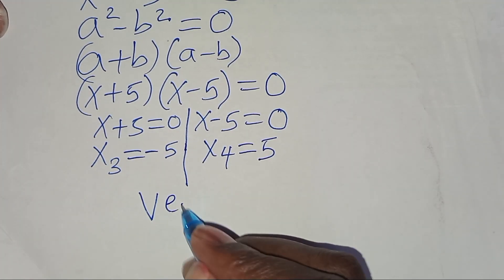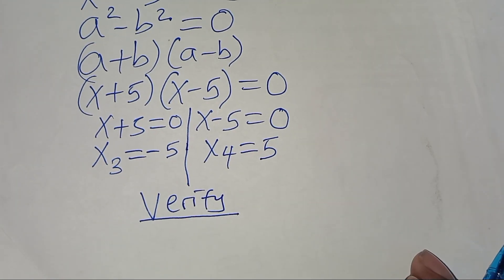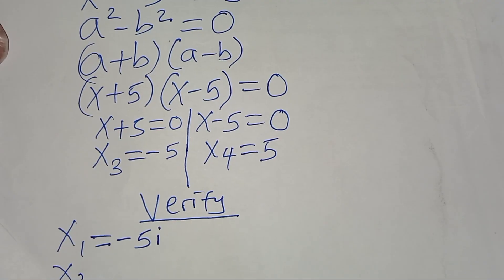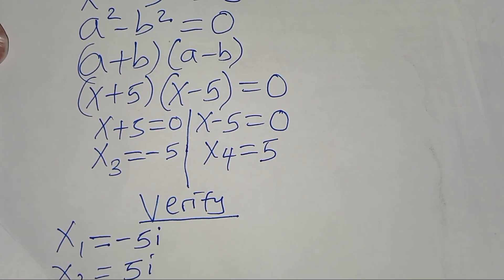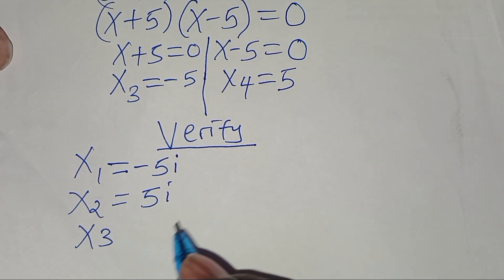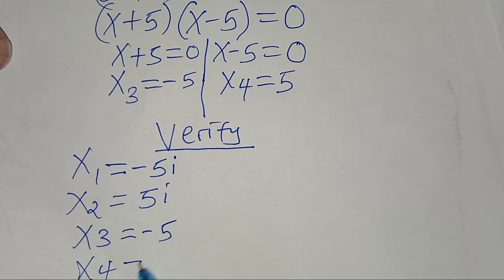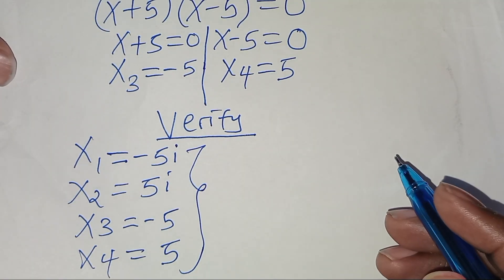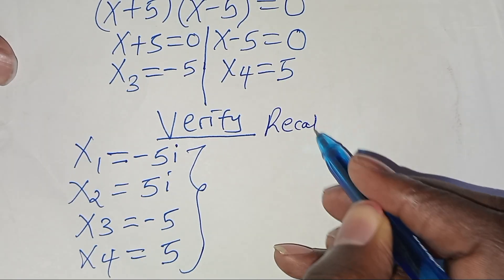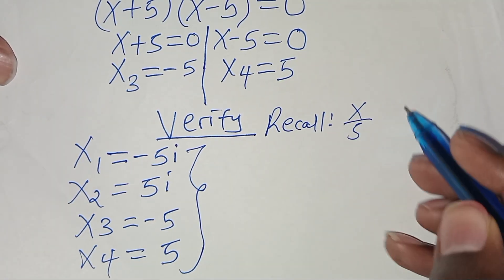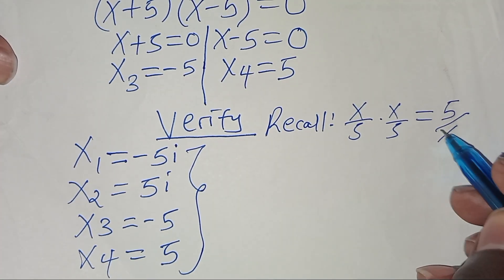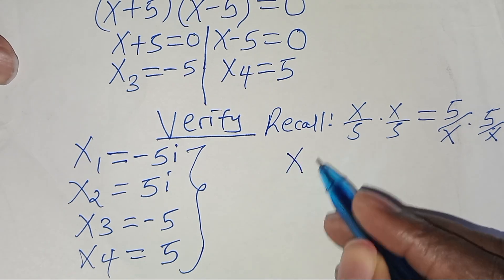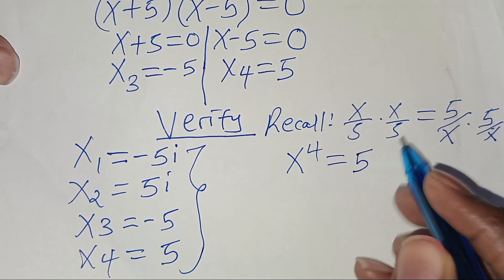Let's verify all four solutions. We have x₁ equal to negative 5i, x₂ equal to 5i, x₃ equal to negative 5, and x₄ equal to 5. Recall that the equation simplifies to x to the power 4 equals 5 to the power 4. Let's substitute each value to confirm.